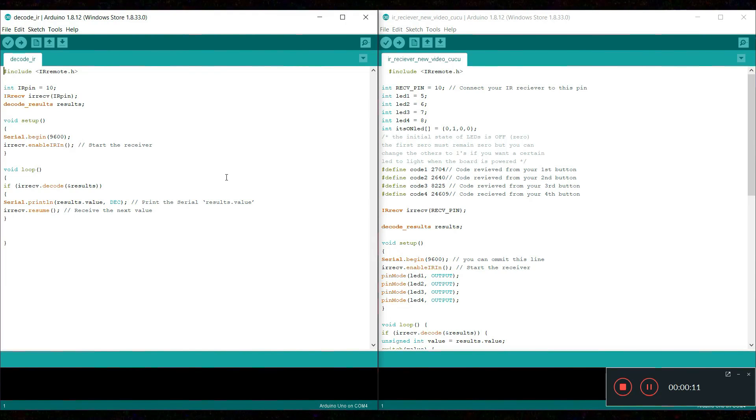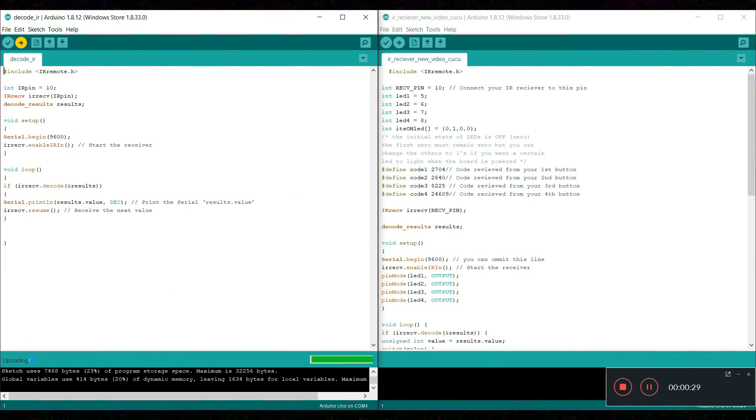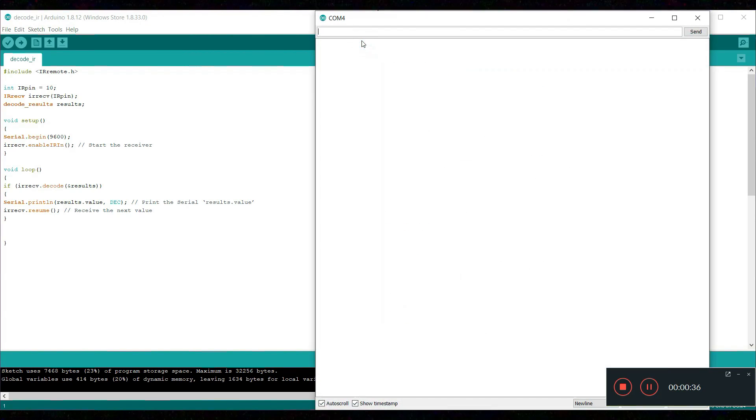So the first thing you need to do is to upload the decode IR. Just upload it, it's uploading. Now finished uploading. Our next step is to open the serial monitor. Here I can see COM4.